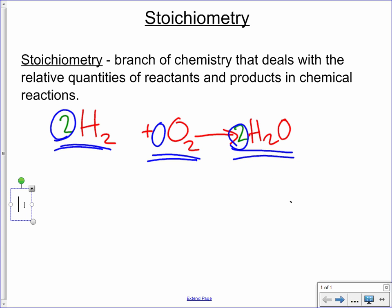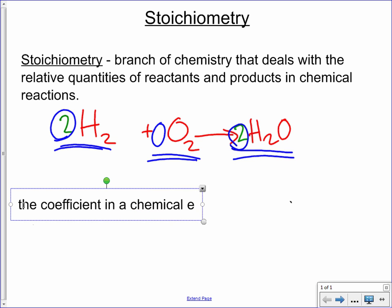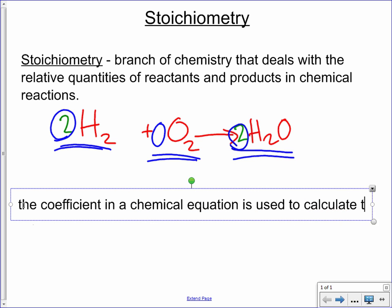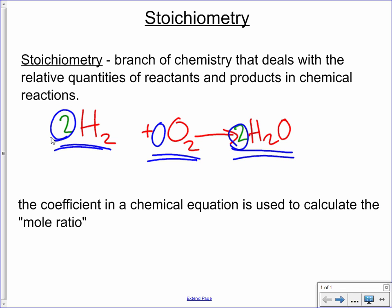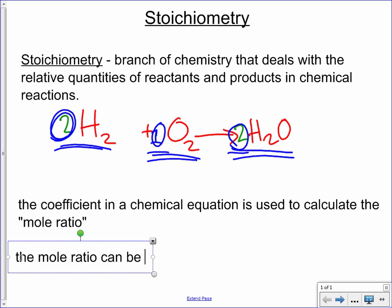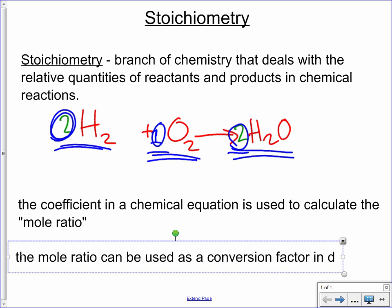We use these coefficients in a chemical equation to calculate something called the mole ratio. It's pretty simple — the mole ratio for hydrogen and oxygen is two to one, as that one is implied: two moles of hydrogen for every one mole of oxygen. The ratio for hydrogen and water is two to two, which we can also say is one to one. Oxygen and water is one to two. The mole ratio can be used as a conversion factor in dimensional analysis.